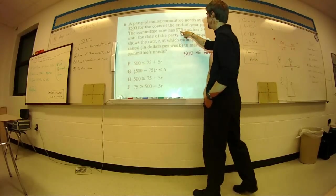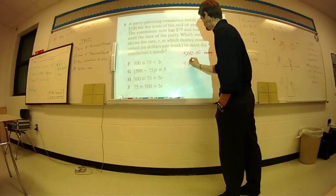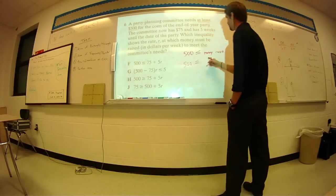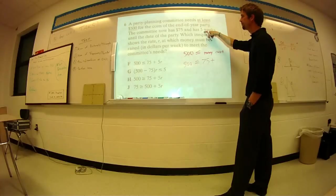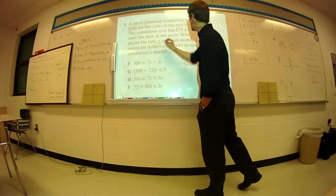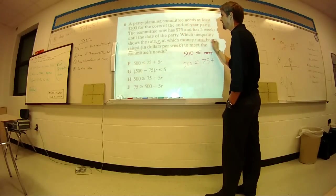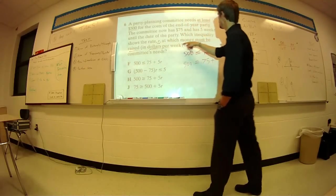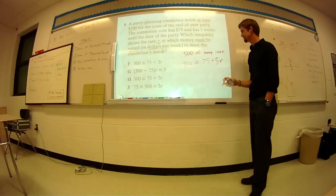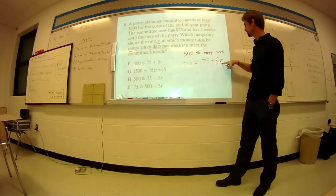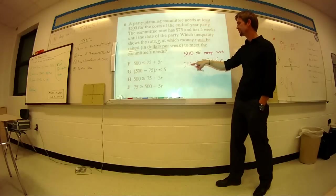It says that the committee now has $75 and has five weeks until the date of the party. So, that's their money raised. Well, they have $75 now, plus five weeks. Inequality shows the rate R at which money must be raised. So they're going to raise R dollars per week in five weeks. So this inequality will allow you to see that they must raise R dollars per week for five weeks, plus the $75 must be greater than or equal to $500.